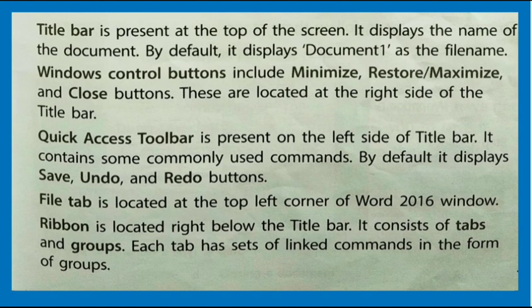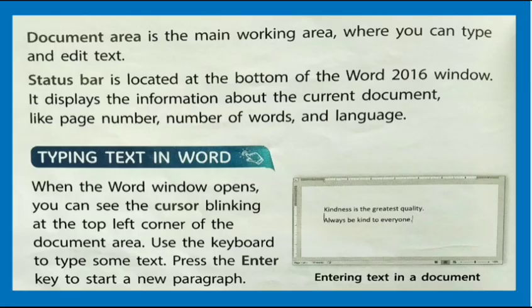The File Tab is located at the top left corner of the Word 2016 window. The Ribbon is located right below the Title Bar and consists of tabs and groups; each tab has sets of linked commands in the form of groups. The Document Area is the main working area where you can type and edit text. The Status Bar is located at the bottom of the Word 2016 window and displays information about the current document, like page number, number of words, and language.